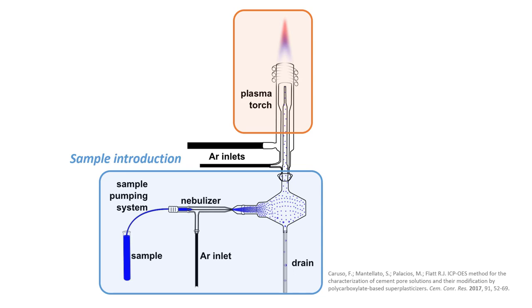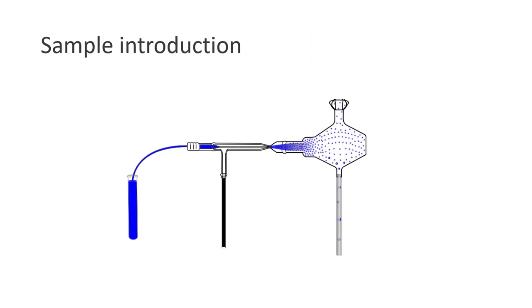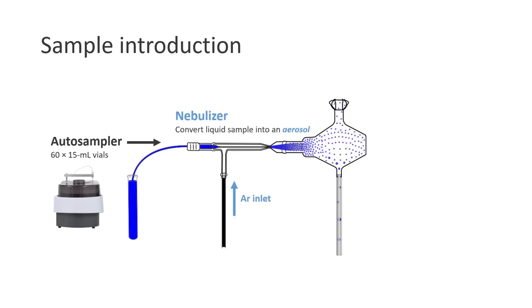First, let's take a look at the sample introduction system. In ICP, samples are introduced in a steady and continuous stream via an autosampler. The autosampler we will be using in this experiment can accommodate up to 60 samples at a time. A nebulizer then converts the liquid sample into an aerosol, which is a fine spray of droplets or mist.